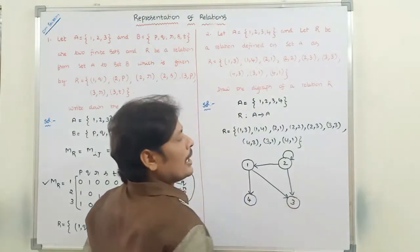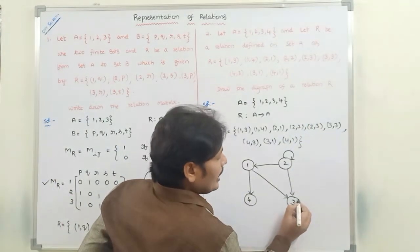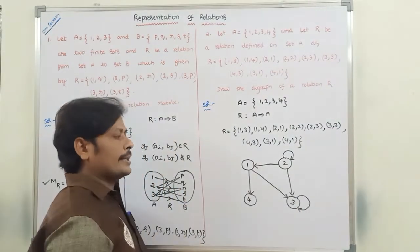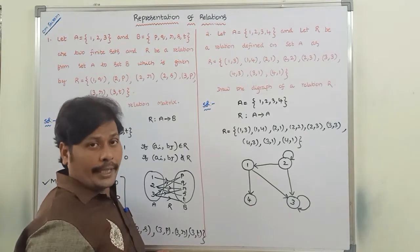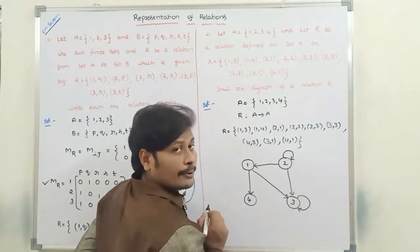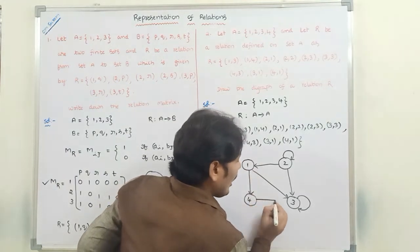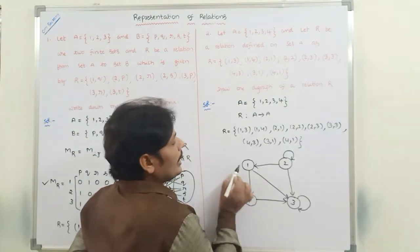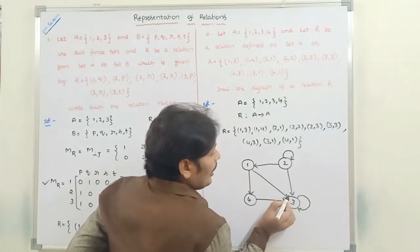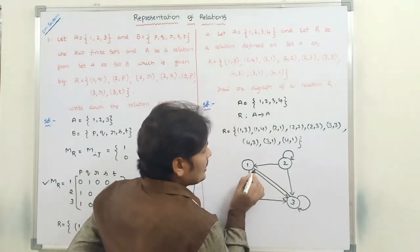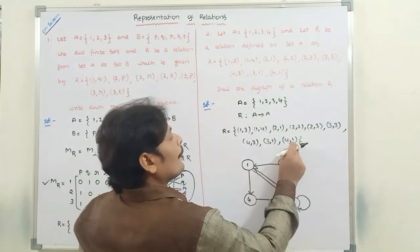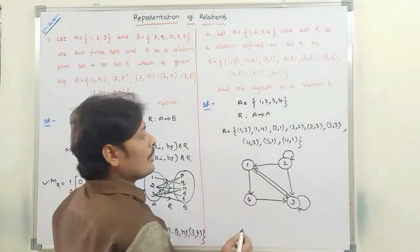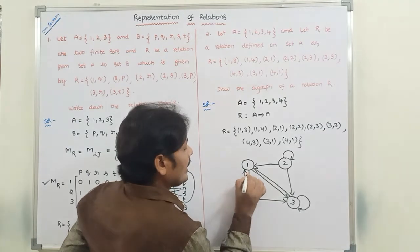For (2,3): vertex 2 is related with vertex 3, so we draw an edge from vertex 2 to vertex 3. For (3,3): vertex 3 is related with itself, so we draw a self-loop at vertex 3. For (4,3): vertex 4 is related with vertex 3, edge from vertex 4 to vertex 3. For (3,1): vertex 3 is related with vertex 1, edge from vertex 3 to vertex 1. For (4,1): vertex 4 is related with vertex 1, edge from vertex 4 to vertex 1.